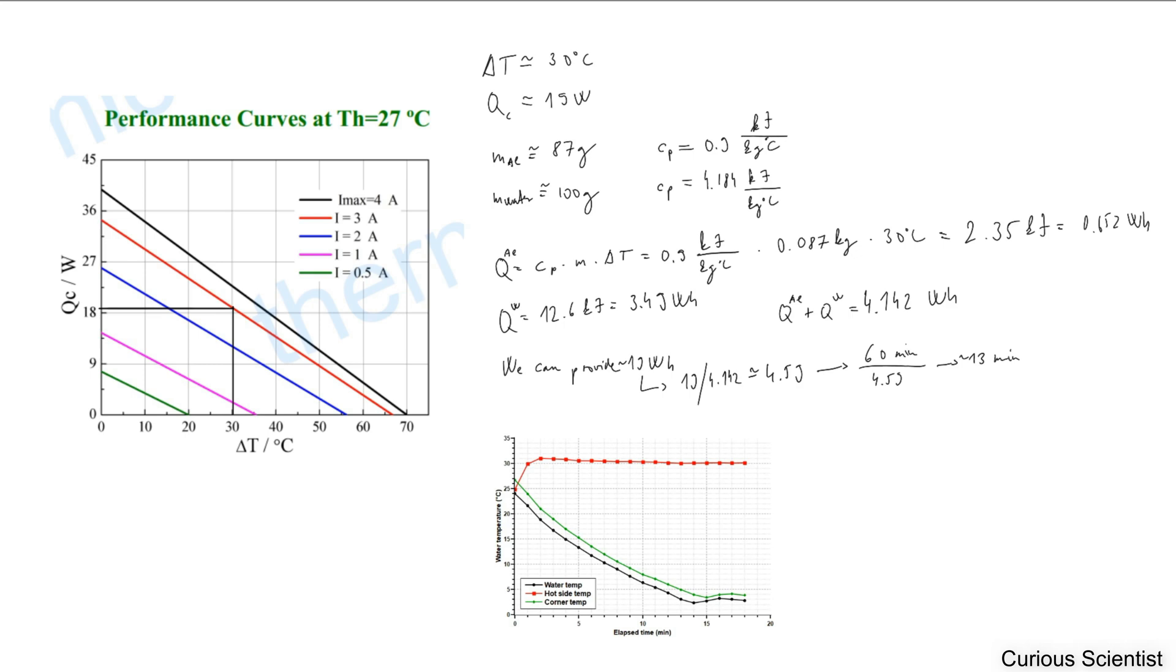So this is the calculation part. We have the performance curve, and it is described at 27 degrees Celsius. I took this instead of the 50 degrees curve,